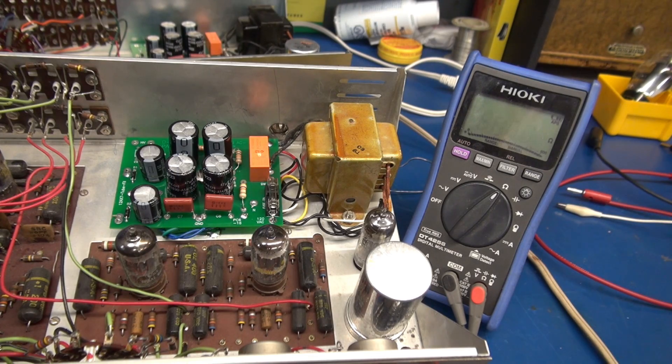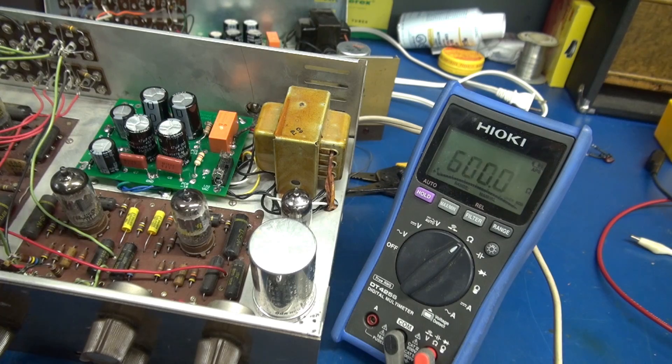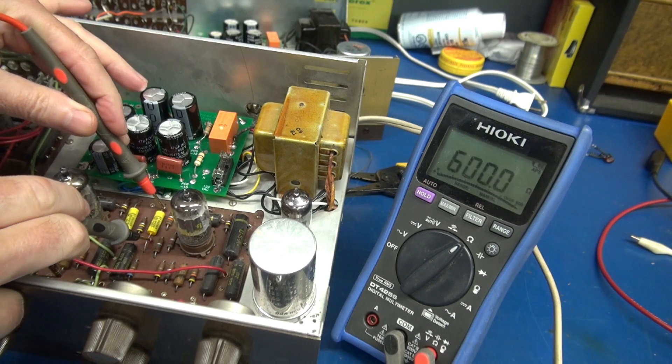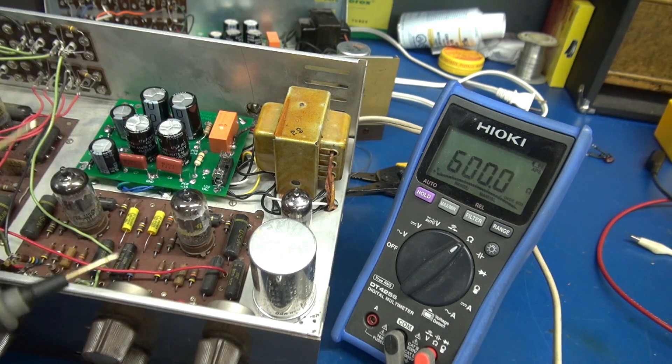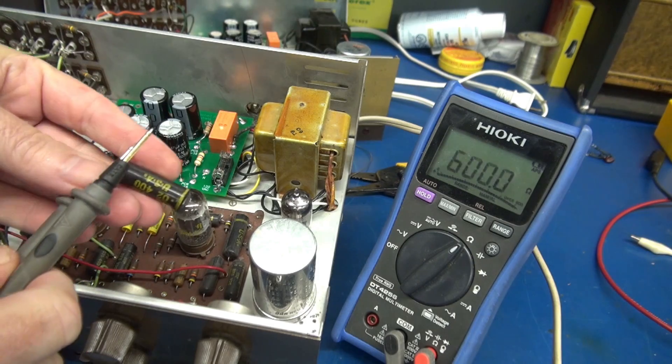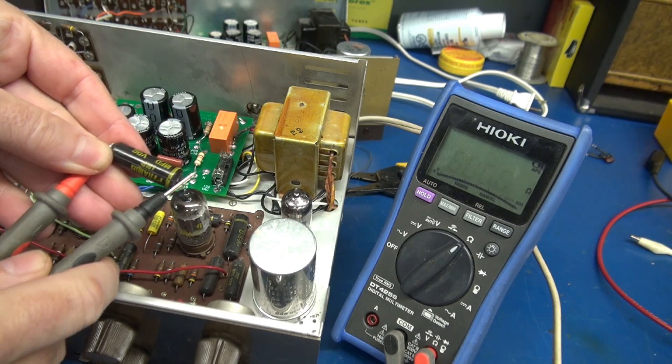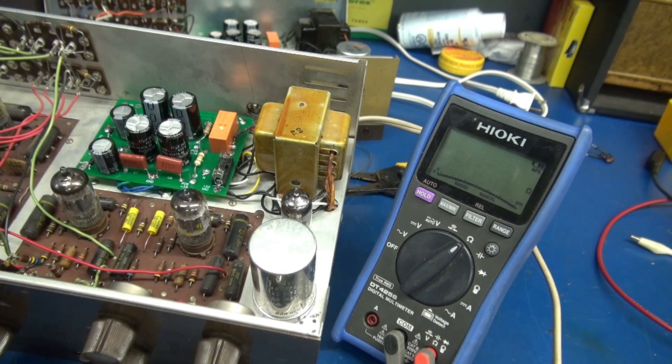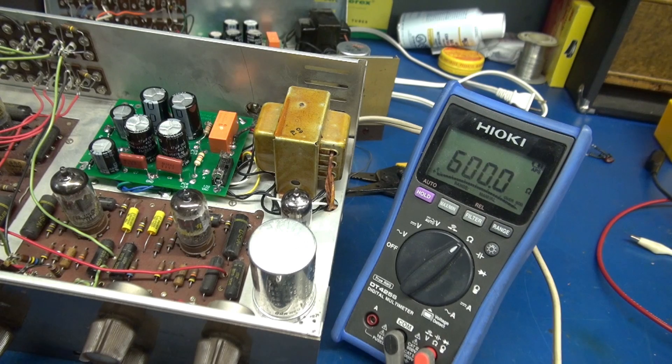So I installed two Mallory .02 microfarad caps. You can see we do not have a short anymore. Here is that old cap that was installed. Directly shorted. Let's fire back up. Check for DC voltage on the output jacks.